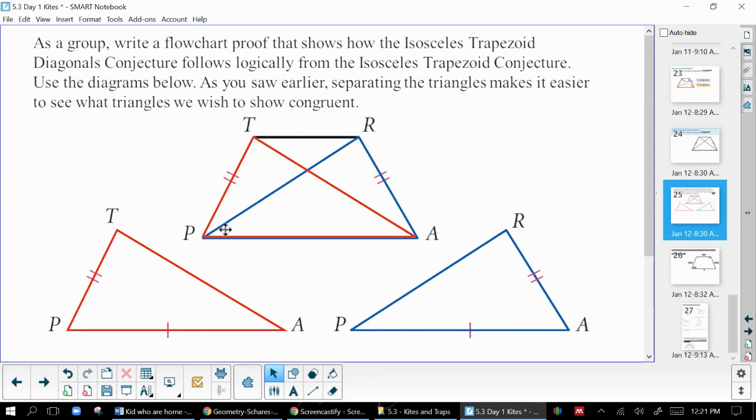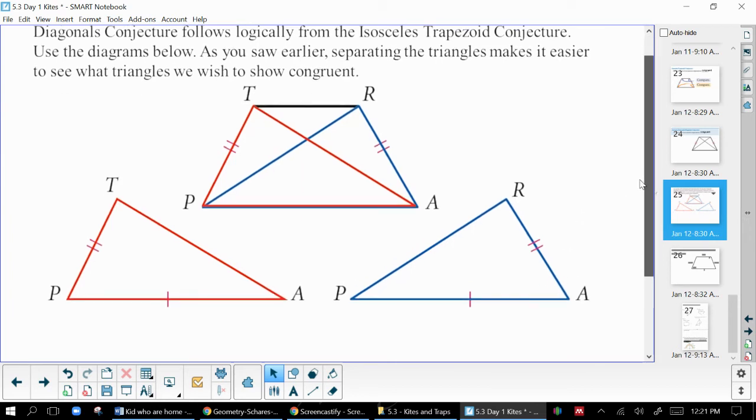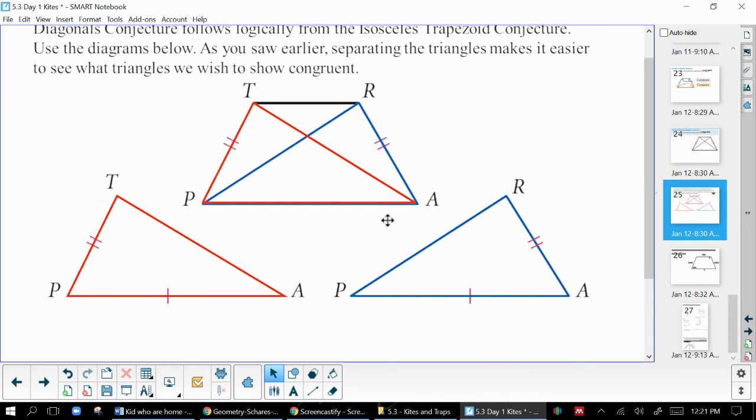And we also have these base angles congruent, so this angle P and this angle A. So those two triangles are congruent by SAS, and so TA and RP also have to be congruent. You've probably actually seen this picture. We've talked about it last chapter.